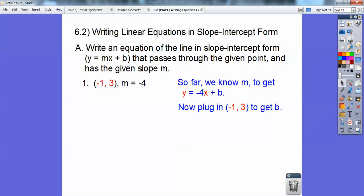Now we're going to go ahead and plug that in. Negative 4 times negative 1 is positive 4. Then you're going to subtract 4 from both sides, and you get b equals negative 1.